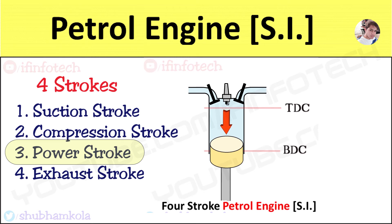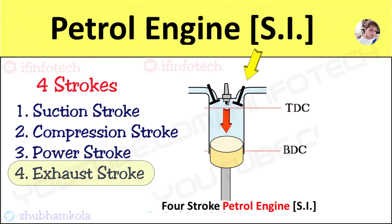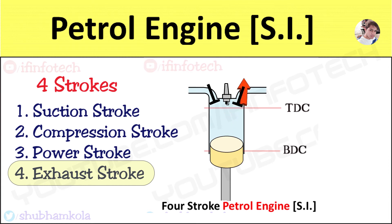Near the end of the power stroke, the exhaust valve opens at an angle of 35 degrees before the BDC position of the piston. This suddenly brings the cylinder pressure down to atmospheric pressure, and the exhaust gases exit the cylinder at constant pressure. The exhaust valve then closes at an angle of 10 degrees after the TDC position of the piston.